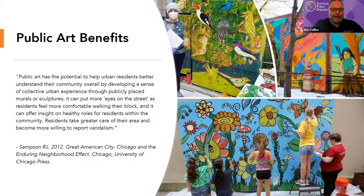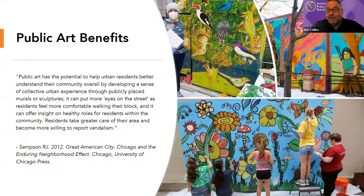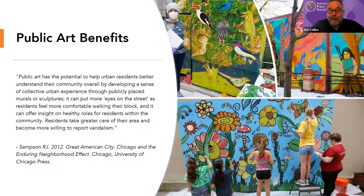Another great author, RJ Sampson, wrote Great American City, spending about ten years studying Chicago. He found that, quote, 'Public art has the potential to better help urban residents understand their community overall by developing a sense of collective urban experience through publicly placed murals and sculptures that can put more eyes on the street as residents feel more comfortable walking their block. It can offer insight on healthy roles of residents within the community, and residents take greater care of their area and become more willing to report vandalism.'